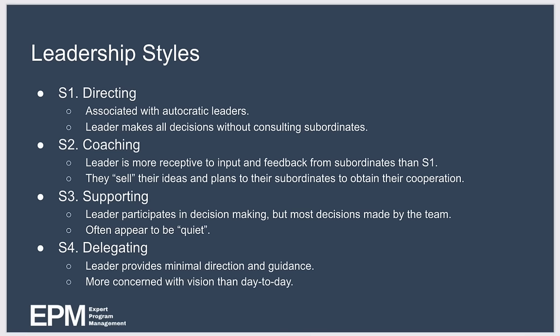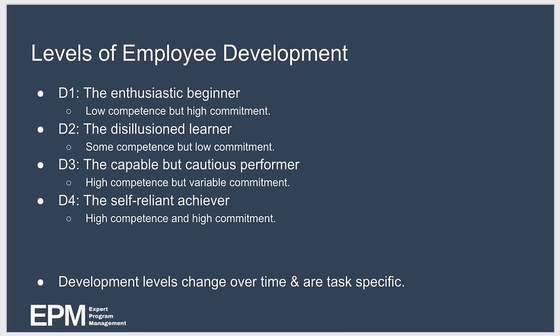Alongside identifying four leadership styles, the model also identifies four levels of employee development. The first is D1, which you can think of as the enthusiastic beginner. Here your subordinate is low competence but high commitment — basically inexperienced but enthusiastic. They may show willing, but they lack the specific skills that the task requires.